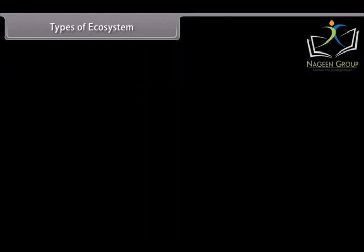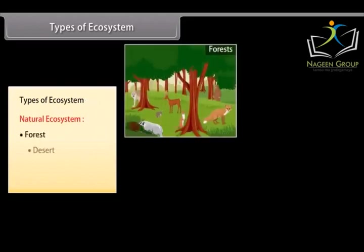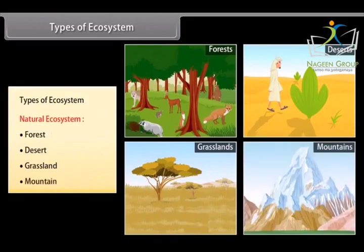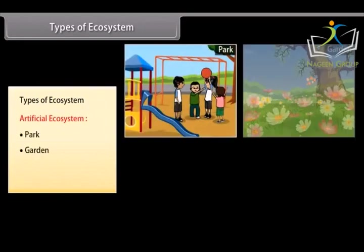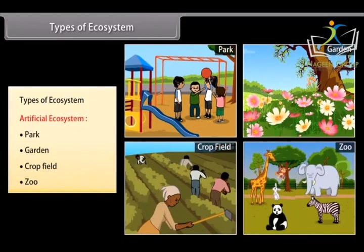There are two different types of ecosystems. (1) Natural ecosystem, in which we have forests, deserts, grasslands, mountains, etc., and (2) Artificial ecosystem, which includes parks, gardens, crop fields, zoos, etc.